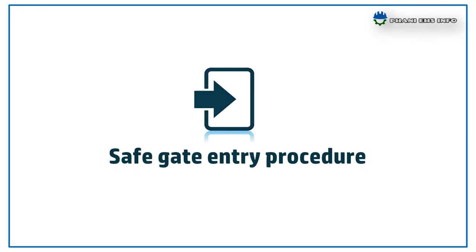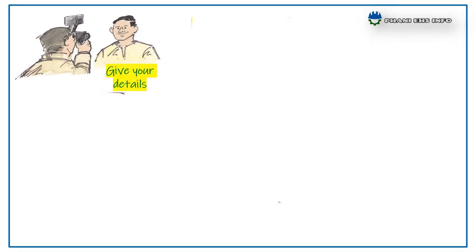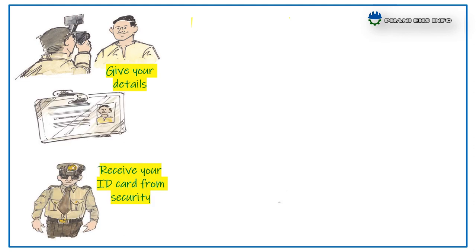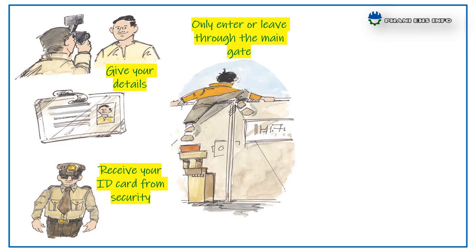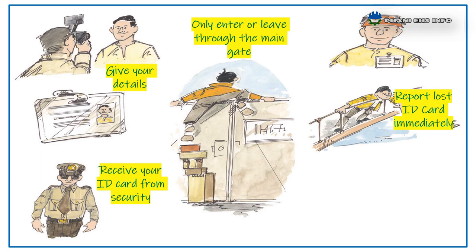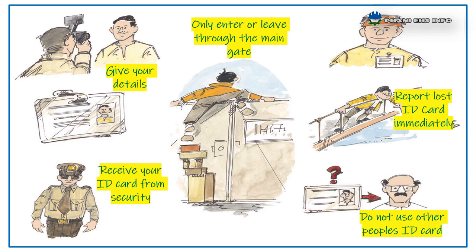Next: safe gate entry procedure. To enter into the site, give your details to the HR department and receive your ID card from security. Only enter or leave through the main gate. Report a lost ID card immediately and do not use other people's ID card.